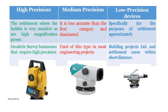This slide refers to the three types of instruments with high precision, medium precision, and low precision devices. In case of high precision instruments, the bubble is very sensitive as it consists of high magnification power; therefore they can be used in geodetic survey work that requires high precision. Whereas medium precision instruments are less accurate than the first category and are used in most engineering projects. Low precision devices, generally the dumpy level or tilting level, are specially used for approximate settlement and used in building projects within short distances.